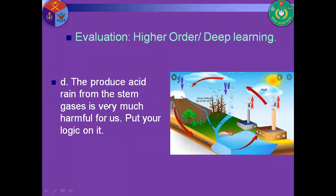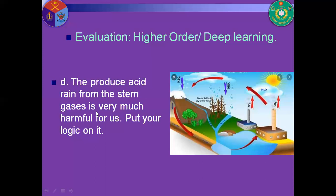The acid rain produced from the steam gases is very much harmful for us. The produced acids — nitric acid and sulfuric acid — create different types of problems. They reduce the pH of soil and water and sometimes kill microorganisms in soil and water, such as geoplankton and phytoplankton, which are killed if the pH is very low. So we need to control the production of these types of gases for our betterment.